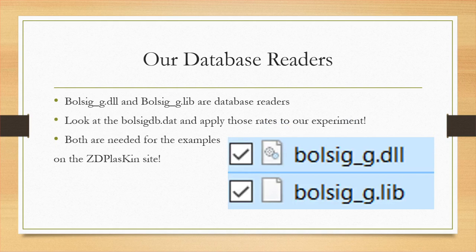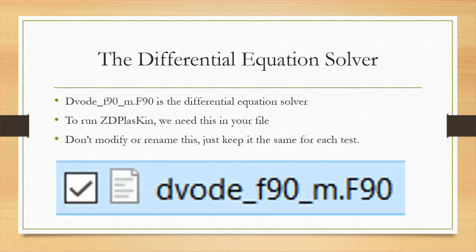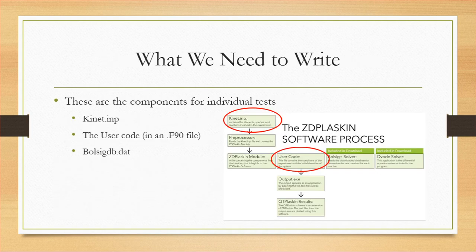We have two database readers, also known as the BULSIG plus reader. These go into your database and use the rate constants to predict our outcome — both need to be in your folder to run the examples. The differential equation solver works through the reactions shown in the kinetics equation earlier, running all of our reactions at once and showing them all interfering at the same time. Next, let's look at the components we need to write for each experiment: the Connect.INP, the user code, and the BULSIG database.